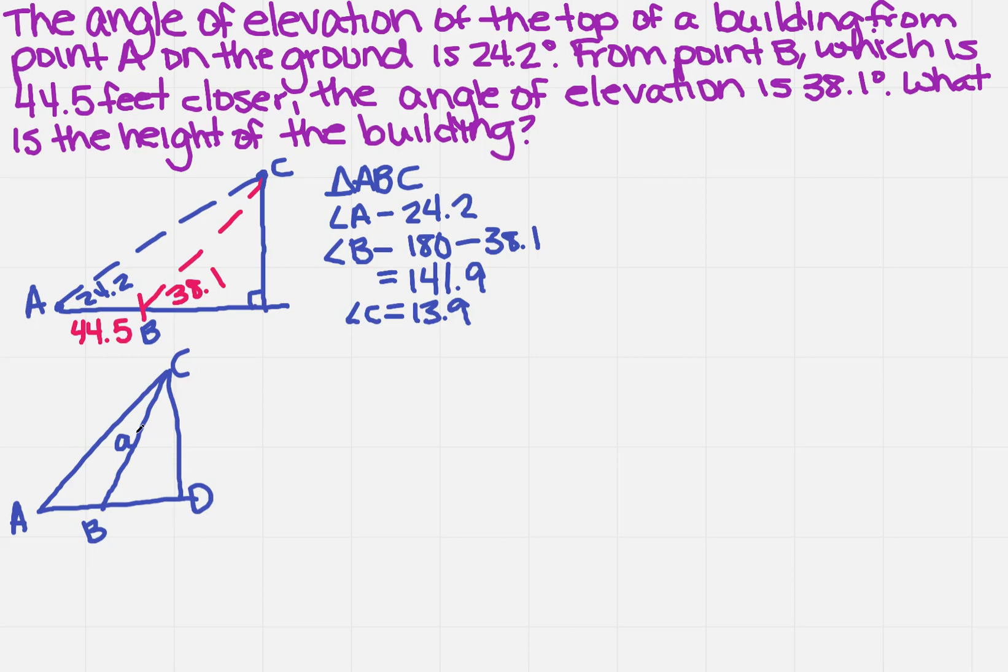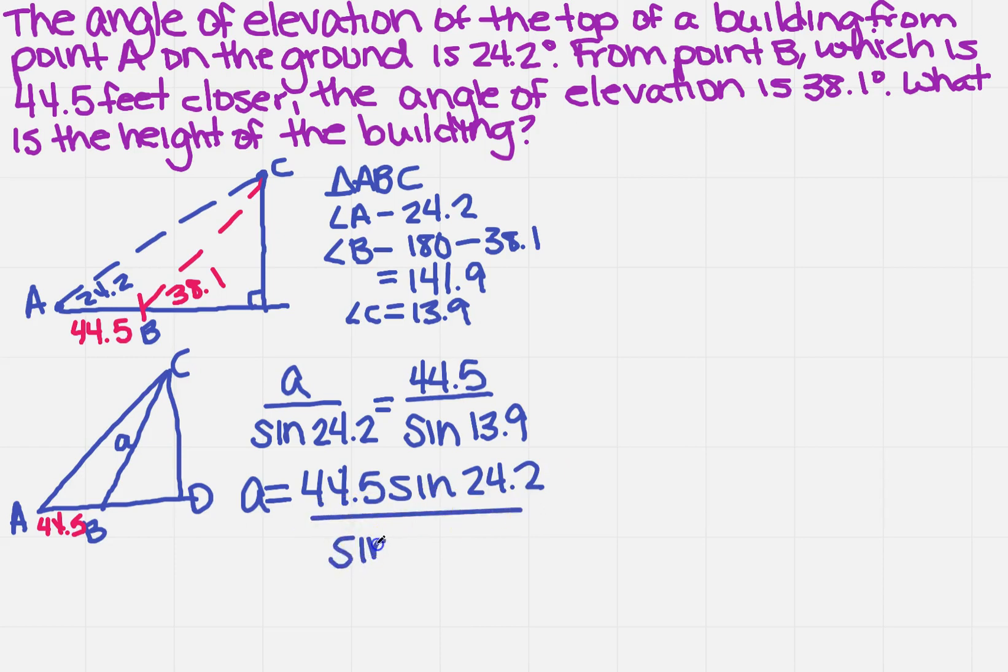Now I need to find this side right here, which is going to be A. And how am I going to find that? I'm going to use the law of sines because we know this distance right here, which is 44.5. So the law of sines tells me that A over the sine of 24.2 equals 44.5 divided by the sine of angle C, which is 13.9. When I solve for A, I'm going to get 44.5 sine 24.2 divided by the sine of 13.9.